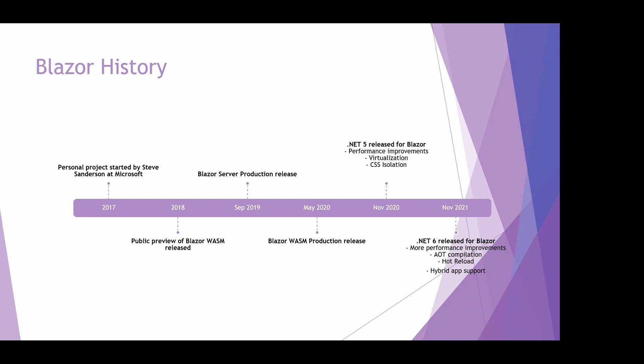.NET 6 was released in November 2021 with more performance improvements. It introduced ahead-of-time compilation, which can speed up CPU-intensive code execution but also significantly increases DLL size. Hot reload was also introduced, making debugging easier. They also introduced hybrid app support for Blazor, allowing you to code in Blazor for the desktop or mobile devices.